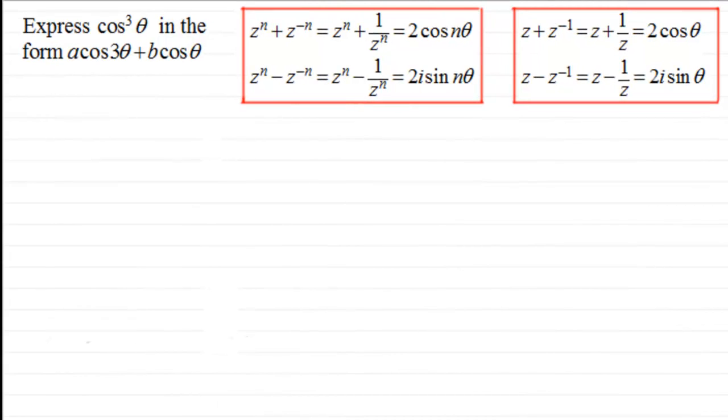Hi, now in the previous video I showed you how to derive these two sets of identities. But what I want to do in this video is show you how we can use some of them to express cos³θ in the form a cos 3θ + b cos θ.